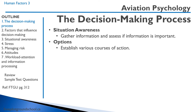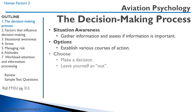Secondly, we want to establish various courses of action — figure out what our options are. Using this diversion example, we can continue to the destination, or we can go to this airport or a second airport. Based on the information you've gathered and the options you've established, you want to make a decision — choose the best option based on the information that you have, but you also want to leave yourself an out.